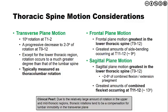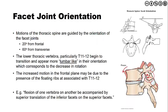T11 and T12 contribute approximately 13 degrees, which is where we start to get into the lumbar spine and where those vertebrae begin to take on a more lumbar appearance. Due to the relatively large amount of rotation in the upper and mid thoracic regions, thoracic rotation tends to be more compensatory for lumbar immobility in the transverse plane. The facet orientation in the lumbar spine is at a 90-degree angle — they lie in parallel — so there is not a whole lot of rotation in the lumbar spine, which is primarily flexion and extension. That is why rotation is typically thought of as being thoracolumbar.